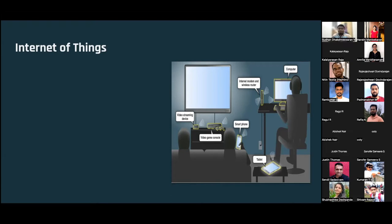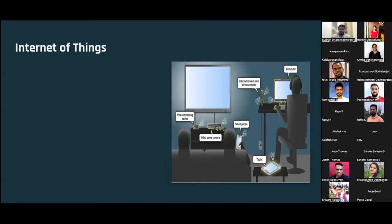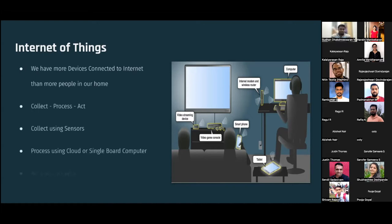In everyone's home today, we have more devices connected to the internet than people. We're letting out a lot of data. IoT helps us make use of all that data. For example, if your AC is connected to your Wi-Fi, you can control it through Alexa. Machines can talk to each other without our direct involvement.